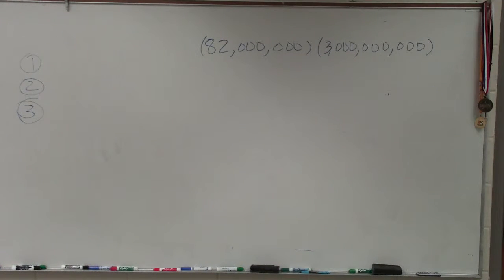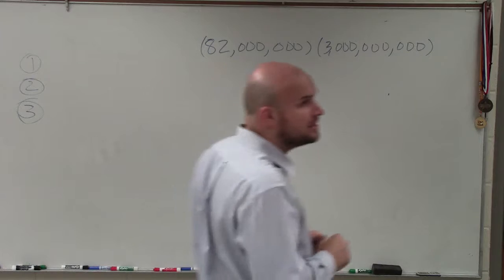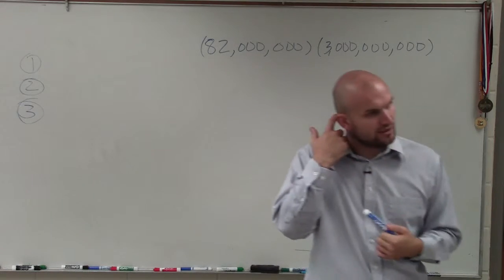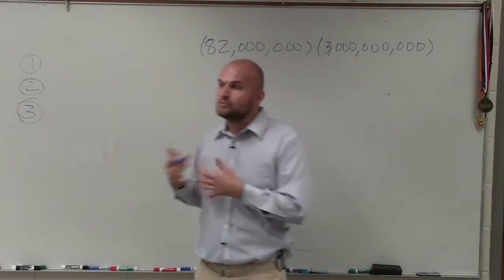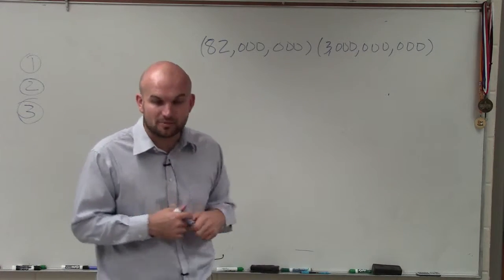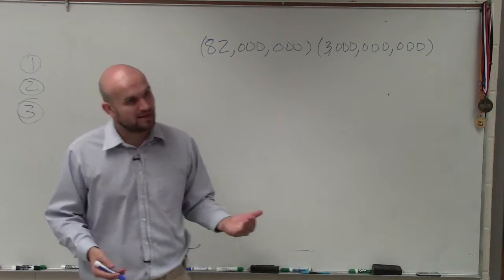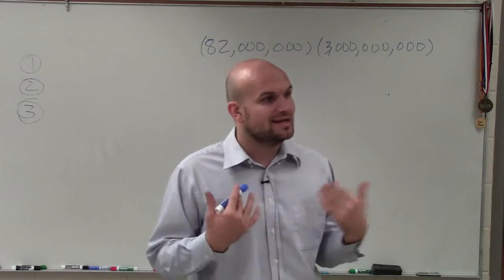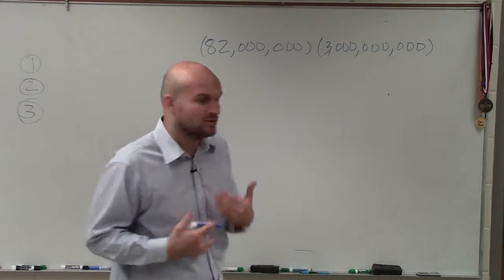There are multiple different ways you can solve this problem. One way is you could just multiply 82 times 3 and then add all the zeros. But another way, if that doesn't make as much sense, is to rewrite these in scientific notation.